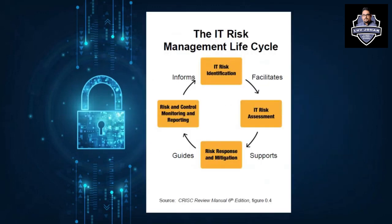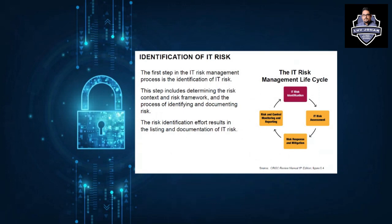Now coming to the main part: what is the IT risk management life cycle? This is from the official ISACA manual. The IT risk management life cycle plays a critical role. The first phase is IT risk identification, then risk assessment, then risk response and mitigation, and finally risk control, monitoring, and reporting. Each phase supports the next: identification facilitates assessment, assessment supports mitigation, and mitigation is followed by monitoring to verify controls are working.